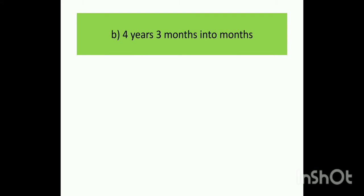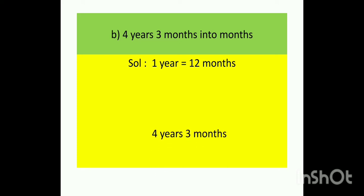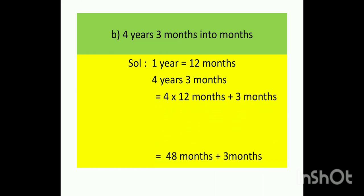Now, next question. Convert 4 years 3 months into months. Children, we know relation between years and months is 1 year is equal to 12 months. So 4 years 3 months is equal to 4 multiplied by 12 months plus 3 months. 4 multiplied by 12 is 48 months plus 3 months. When we will add 48 plus 3, our answer is 51 months.